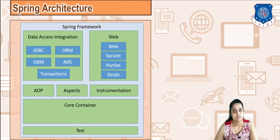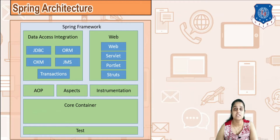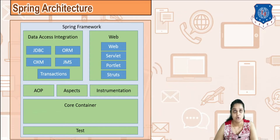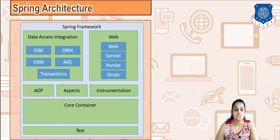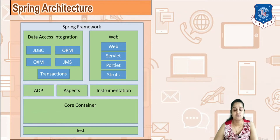Next is Aspects. With Aspects you can easily integrate any module into your code without making major changes. There is very loose coupling between all the modules and you can add any module as and when required. Next is Instrumentation, which is basically used for class loaders. If you want to load any class, instrumentation is helpful — for example, loading com.mysql.jdbc.driver requires a class loader available through instrumentation.